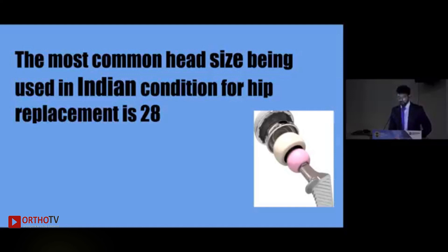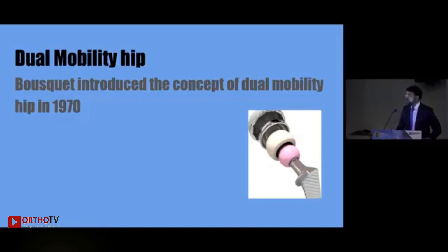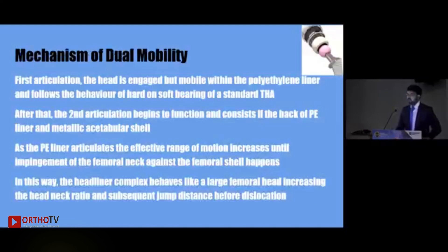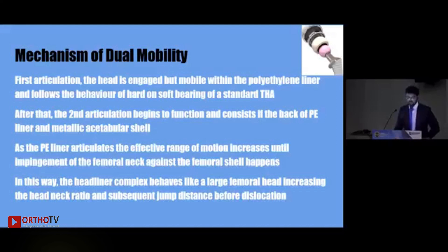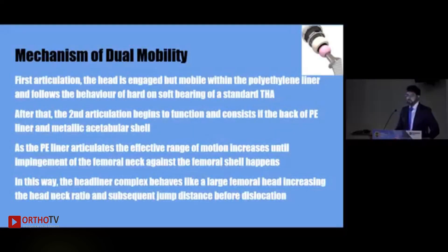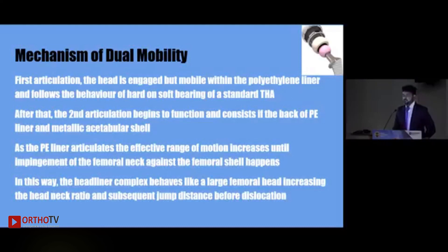The dual mobility hip was introduced by Bousquet in 1974. The concept of dual mobility involves two articulations: in the first articulation, the femoral head engages with the mobile polyethylene liner and follows the typical behavior of a hard-on-soft bearing of a standard total hip arthroplasty. After that, the second articulation begins to function.